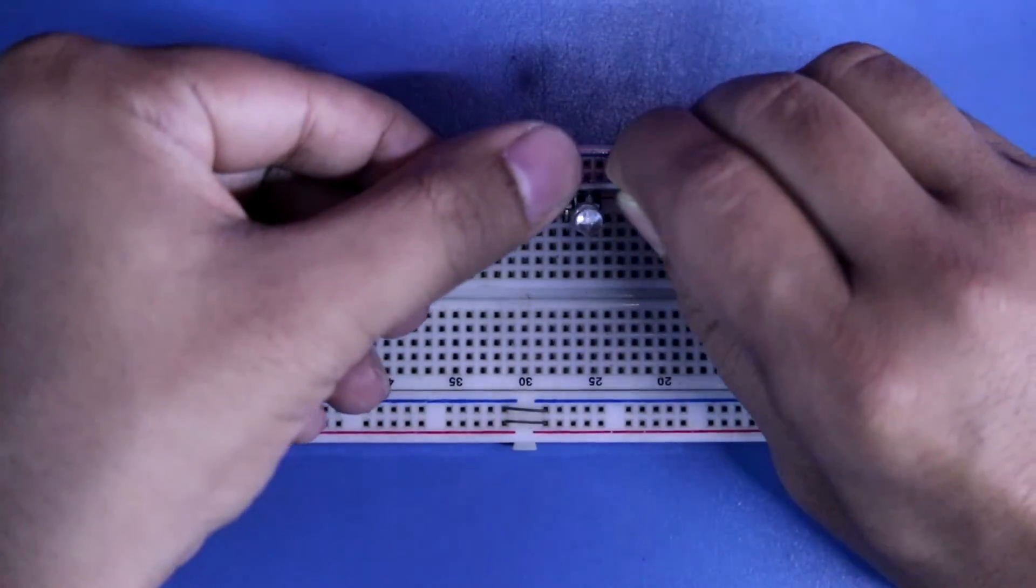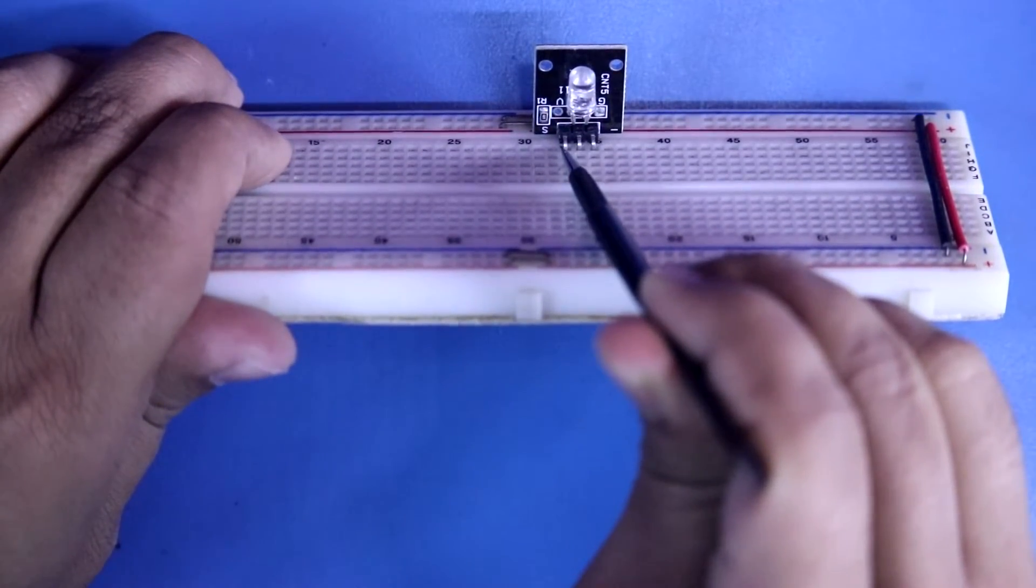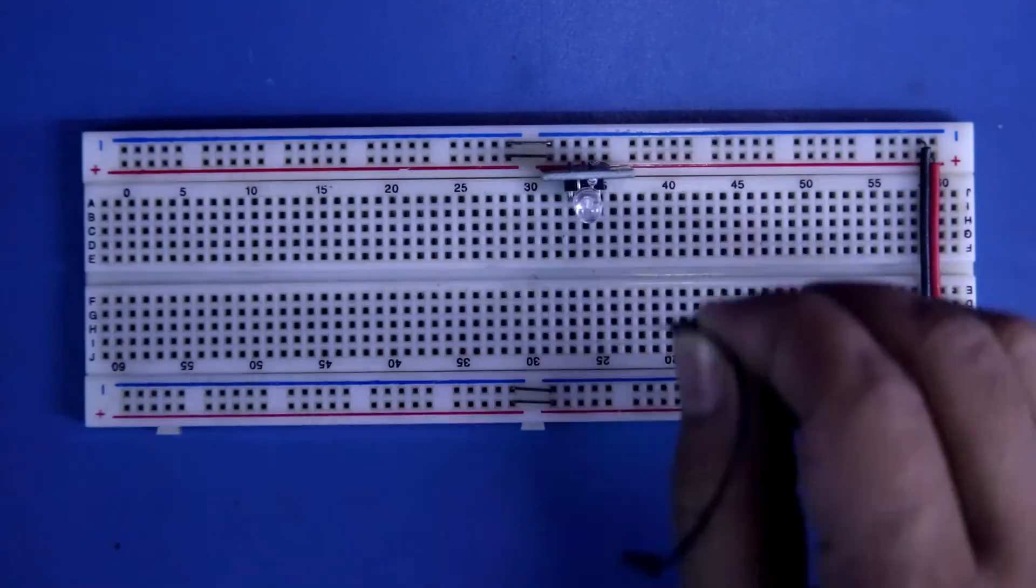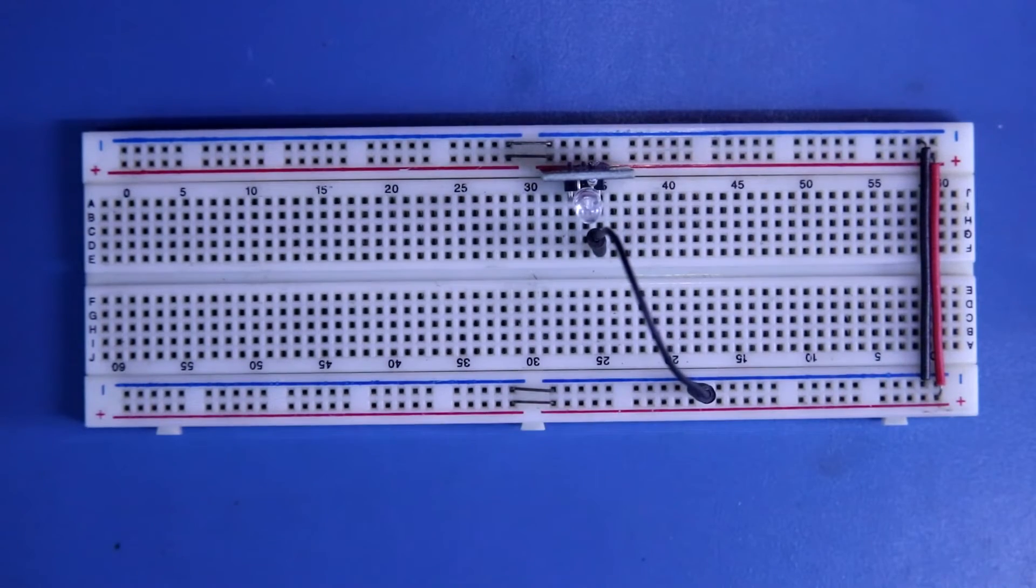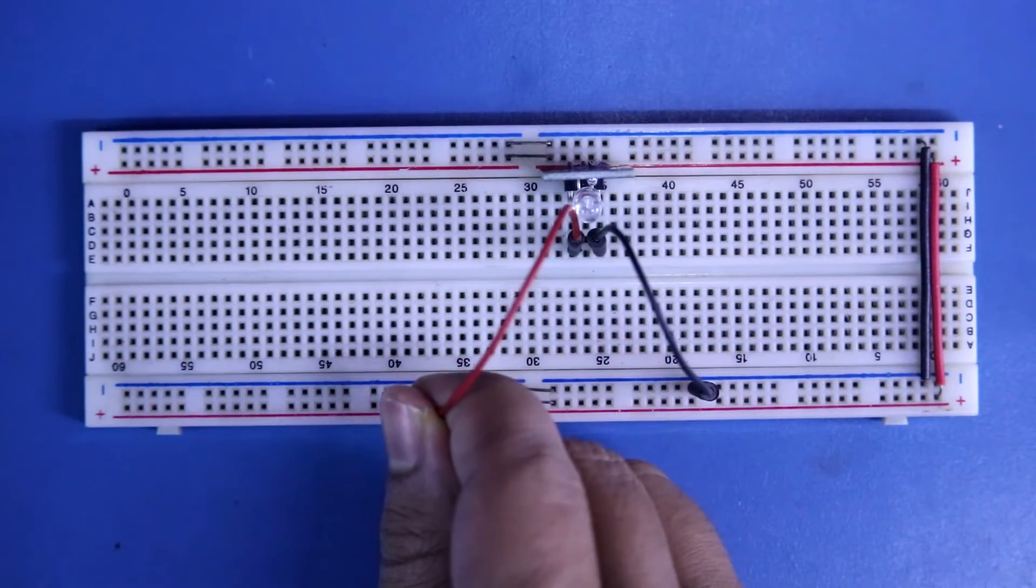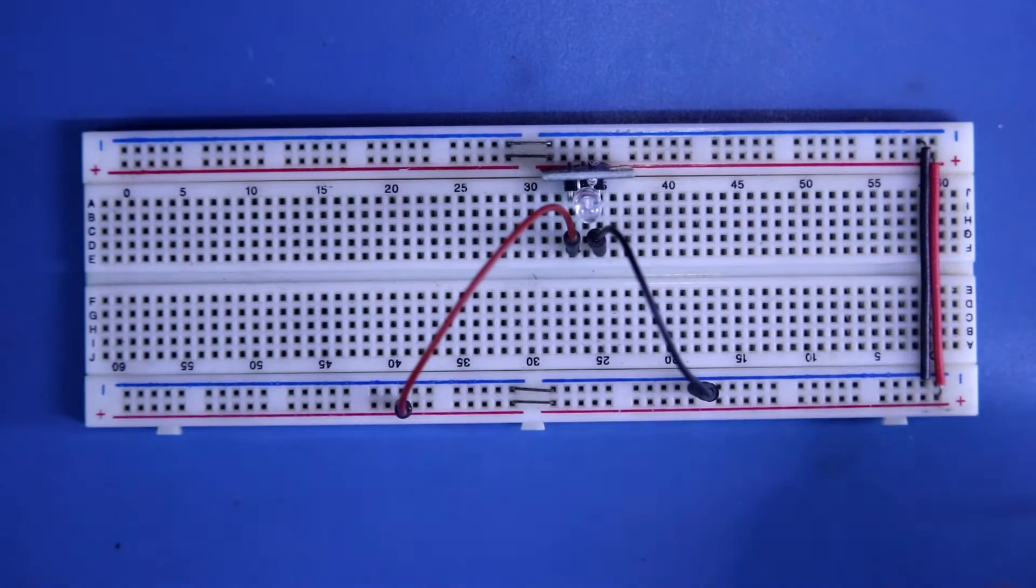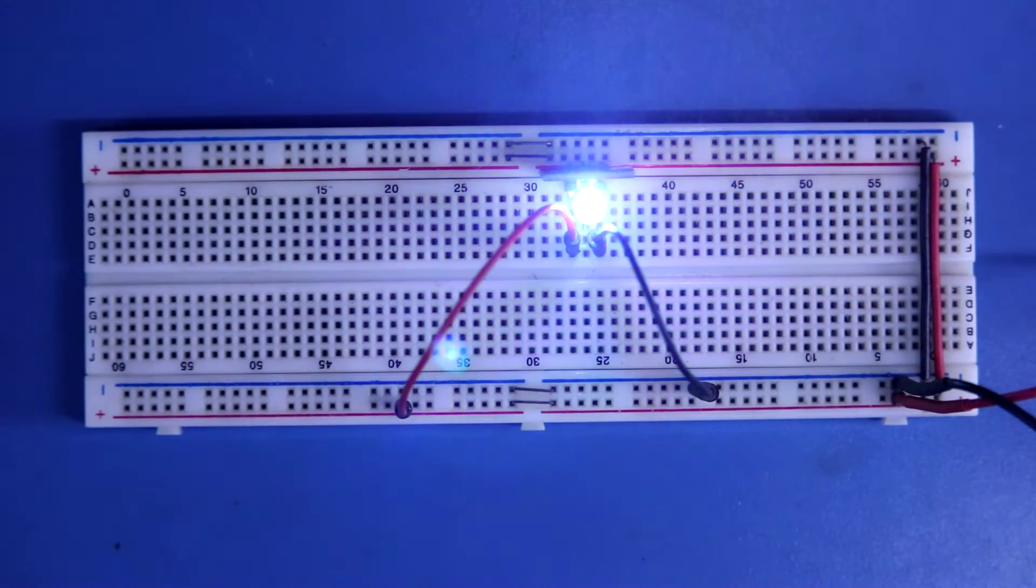Now I am putting this LED module to the breadboard. This side is signal or positive pin and this is negative pin. Negative pin to the negative rail, and positive pin to the positive rail. Connecting 3.5V to the breadboard. And this is it.